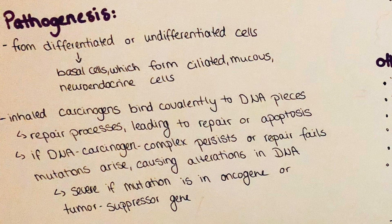If the carcinogen binds to a region which codes for an oncogene or for a tumor suppressor gene, then the likelihood of developing cancer will be even higher. When activated, oncogenes can lead to uncontrolled cell growth and proliferation. Tumor suppressor genes, however, induce apoptosis in cells, but when these are changed or deactivated, this function will be reduced and there might be uncontrolled growth and proliferation because of the inhibition of apoptosis.